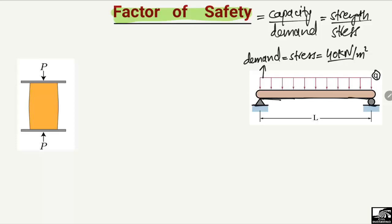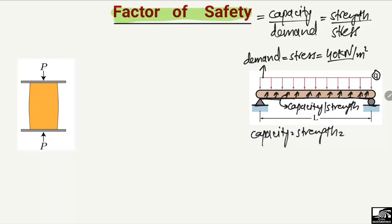Due to this load, there will be some resistance provided by the beam in order to take this load. This resistance created by the beam section is the capacity or strength of the beam. We assume that the capacity or strength of this beam section is 80 kN per square meter. So our demand is 40 kN/m² and our capacity is 80 kN/m².